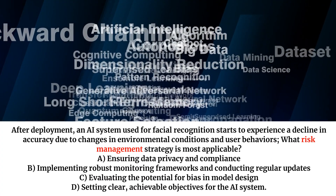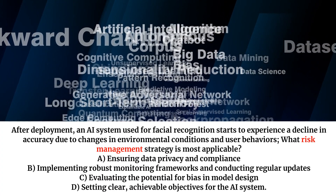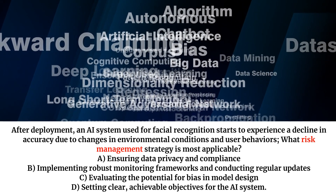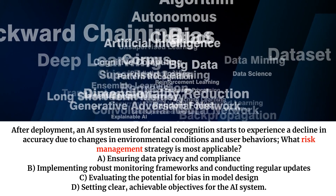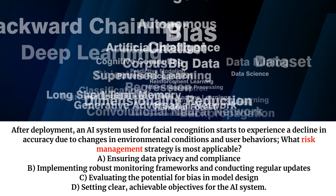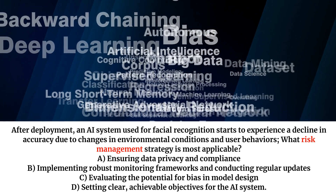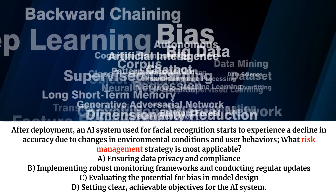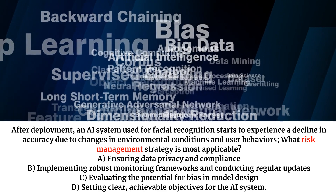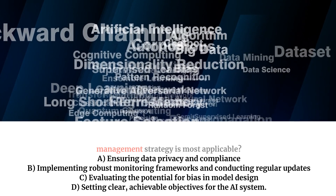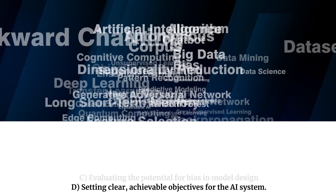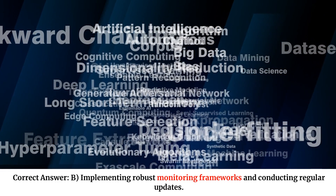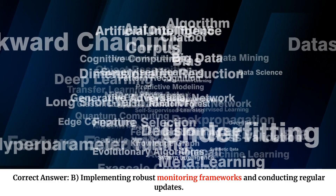After deployment, an AI system used for facial recognition starts to experience a decline in accuracy due to changes in environmental conditions and user behaviors. What risk management strategy is most applicable? A. Ensuring data privacy and compliance. B. Implementing robust monitoring frameworks and conducting regular updates. C. Evaluating the potential for bias in model design. D. Setting clear, achievable objectives for the AI system. Correct answer: B. Implementing robust monitoring frameworks and conducting regular updates.